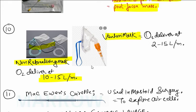Next is the Venturi mask. Oxygen delivers at 2 to 15 liters per minute.